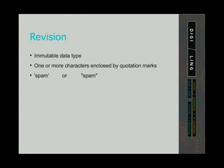Strings are immutable data types, which means that an object cannot be changed after it has been created. Every time we make a change a new object is created. Strings are one or more characters enclosed by quotation marks. We can use either single quotes or double quotes.